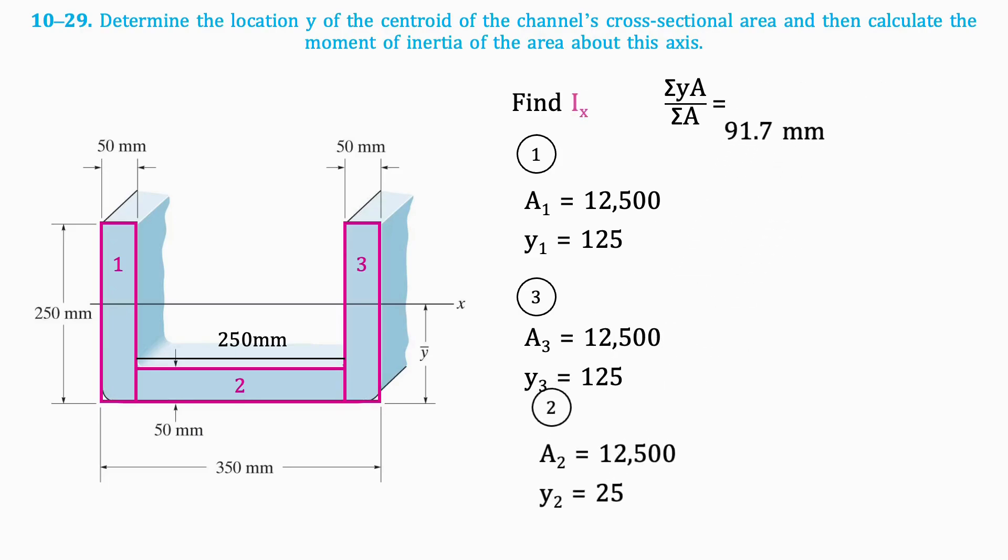Next, we need to find the moment of inertia of the whole shape, which means we need to find the moment of inertia of each section, and then add them all together. This requires finding the distance from the centroid of each section to the centroid of the shape. We will call this distance dy.